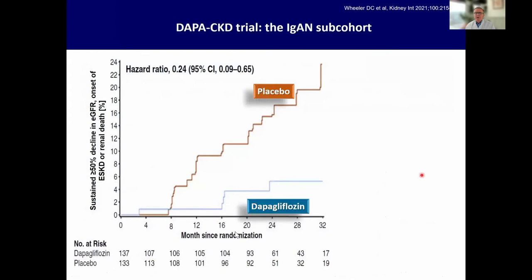The latest and newest addition to supportive care will be SGLT2 inhibitors. I believe we have convincing evidence now that they are a very beneficial addition for essentially all glomerular diseases. Here's the IgA sub-cohort from the DAPA CKD trial, and you can see this dramatic risk reduction for the renal endpoint of 50% GFR loss, onset of end-stage kidney disease or renal death — a 76% risk reduction. Almost too good to be true.